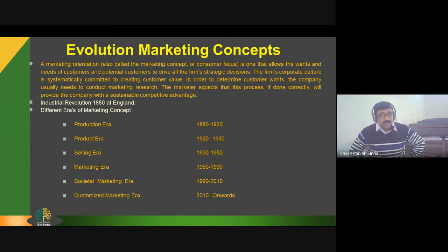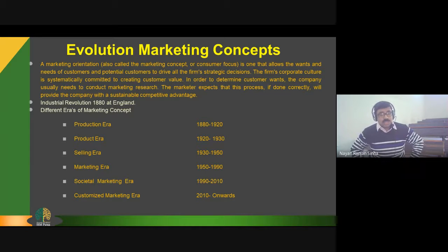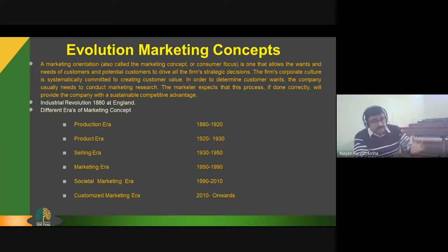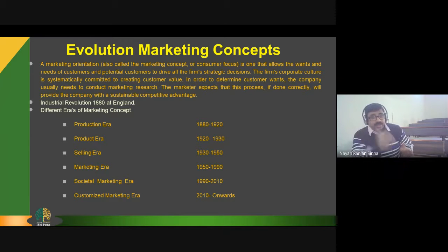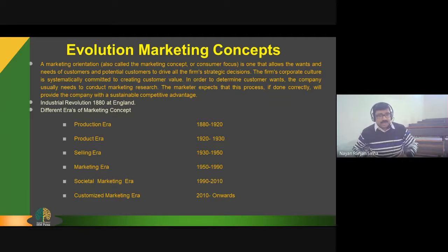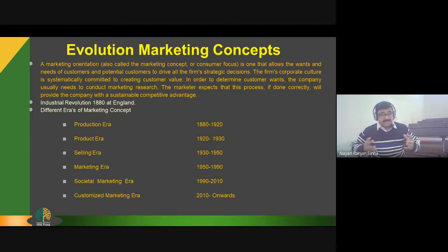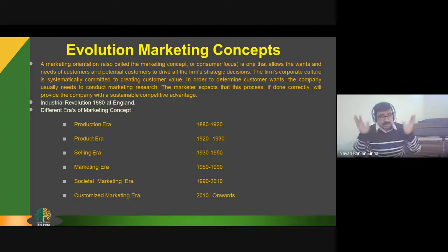Then after 1920, marketer orientation shifted towards product specifications. Marketers started focusing on offering better quality and superior products. This product era continued from 1920 to 1930. Later on, in 1930, marketers increased their selling capabilities, enhancing their sales forces and becoming more competitive.